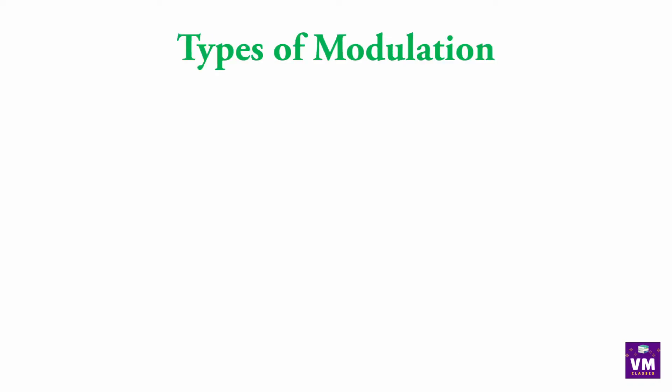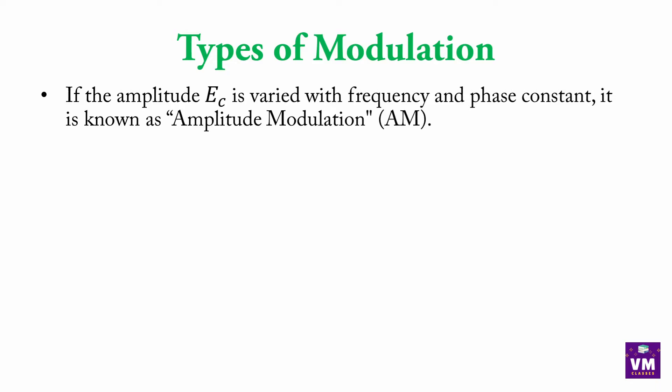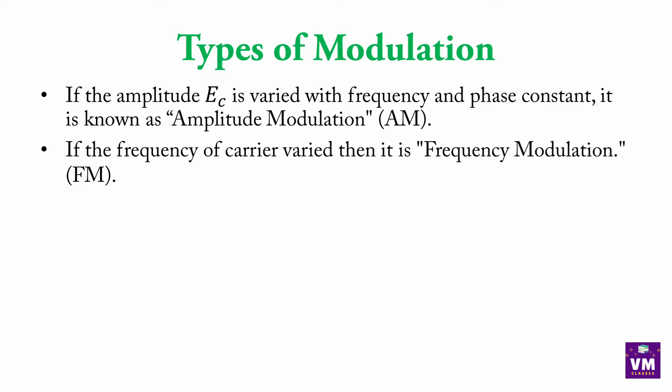Types of modulation: If the amplitude E_C is varied with frequency and phase kept constant, it is known as Amplitude Modulation (AM). In amplitude modulation, the amplitude varies while phase remains constant.